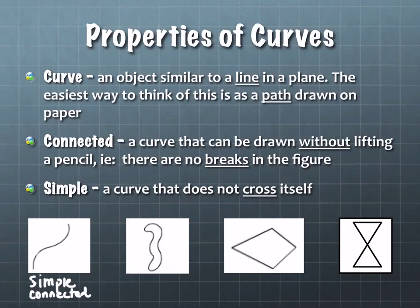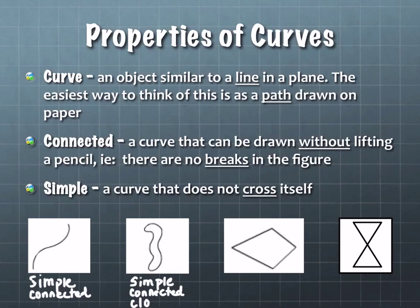How about the second one? It is simple, it is connected, and it is closed. It doesn't matter where the starting and ending point is — wherever you start, that's where you're going to end in order to trace around the entire figure.